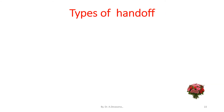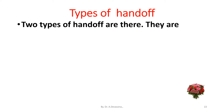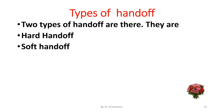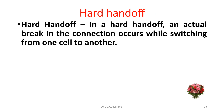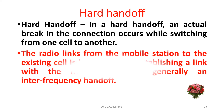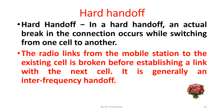Types of handoff: there are two types — hard handoff and soft handoff. In a hard handoff, an actual break in the connection occurs while switching from one cell to another. The radio link from the mobile station to the existing cell is broken before establishing a link with the next cell. It is generally an inter-frequency handoff.